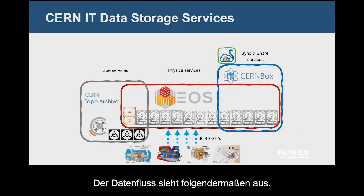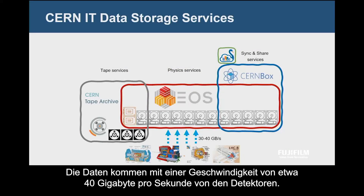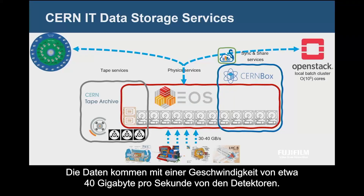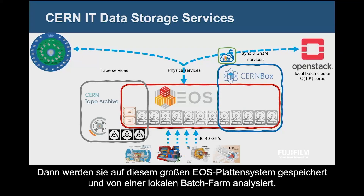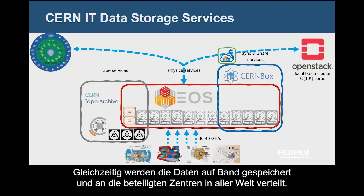The data flow is the following. Data is coming from the detectors at roughly 40 gigabytes per second. Then it is stored on this EOS big disk system where it is analyzed by the local batch farm. At the same time, data is stored on tape and distributed to the participating centers around the world.